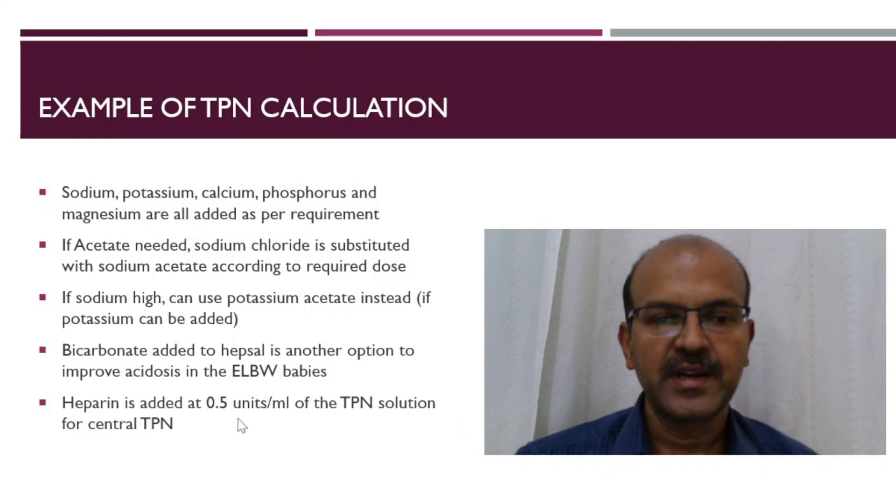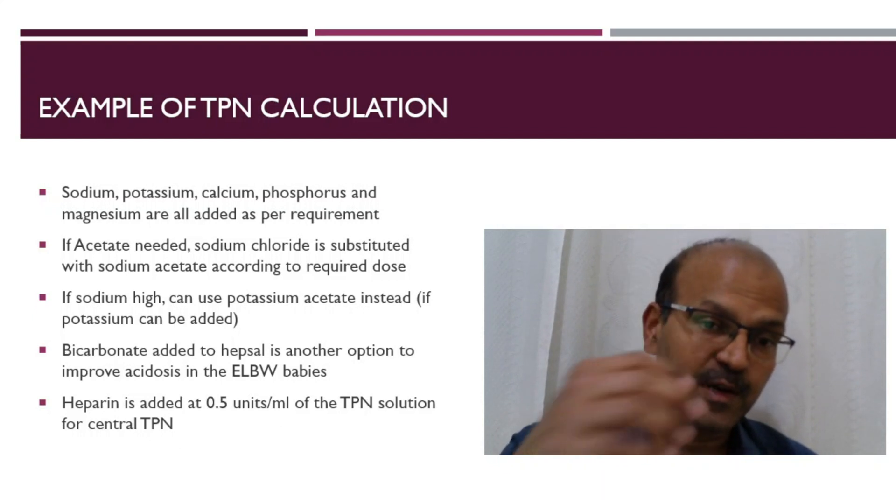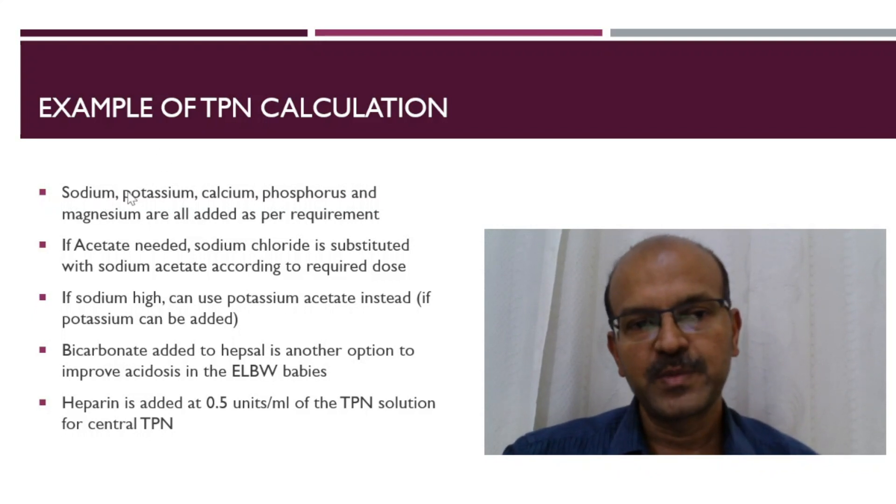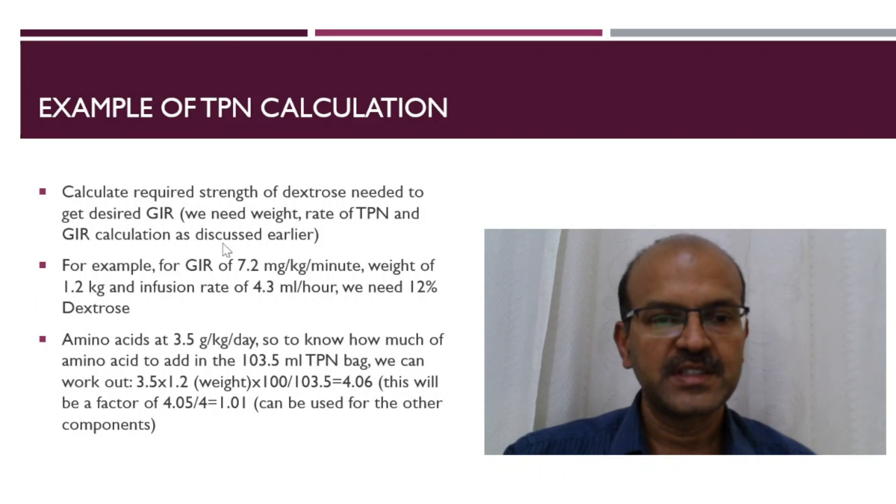Heparin, we tend to add 0.5 units per ml of the TPN solution for central TPN. This is how we calculate the TPN requirements. If we have 3.5 millimoles per kg per day of sodium, the calculation is exactly the same: 3.5 times 1.01 will be added to the bag. If the TPN volume, the bag is a bigger volume, then this proportion will change.